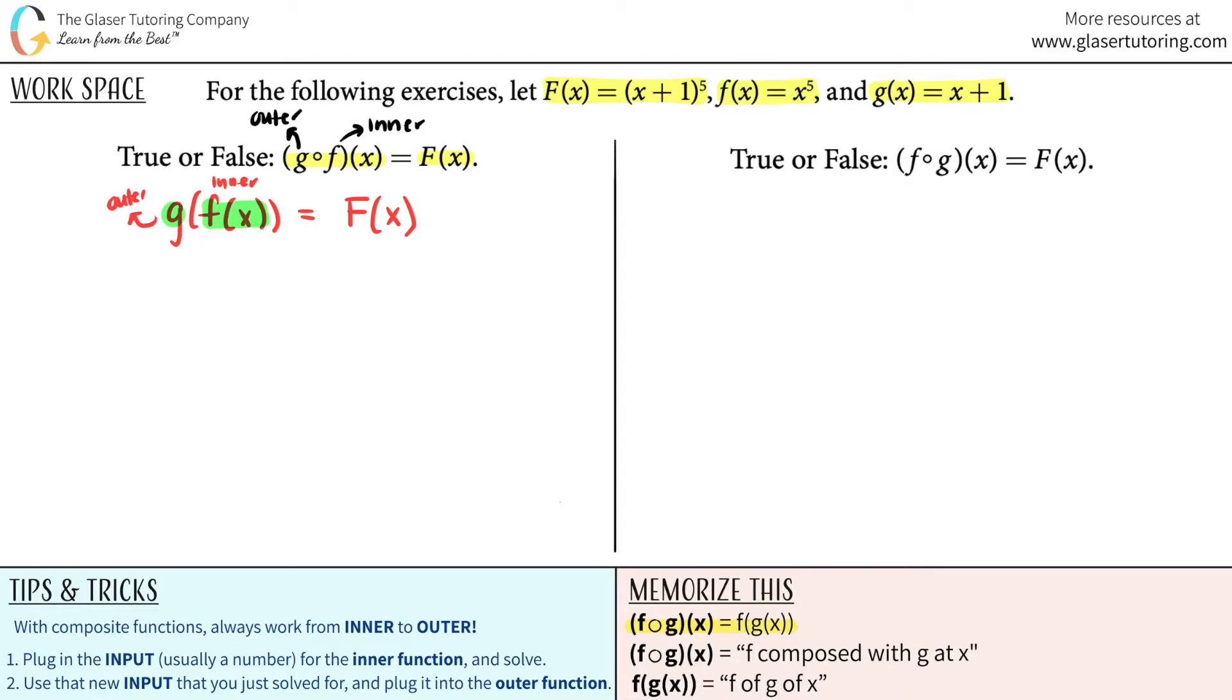So for the first part, let's see, we're going to find what G of F of X is. Then we're going to see, well, does it equal this function or does it not equal this function? So for the first one, F of X is just this guy, right? F of X was just X to the fifth.